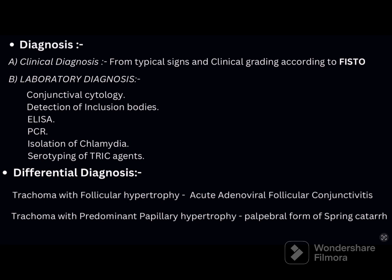Detection of inclusion bodies: conjunctival smear stained with Giemsa, iodine stain, or immunofluorescent staining — more commonly done in stages of active trachoma. ELISA is done for chlamydial agents. PCR (polymerase chain reaction) is also useful. Isolation of Chlamydia is possible by yolk sac inoculation method and tissue culture technique — the standard is McCoy cell culture requiring 3 days. Serotyping of TRIC agents is done by detecting specific antibodies using micro-immunofluorescence. Direct monoclonal fluorescent antibody microscopy of conjunctival smear is rapid and inexpensive.